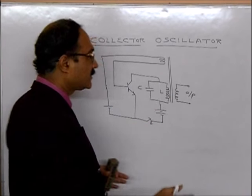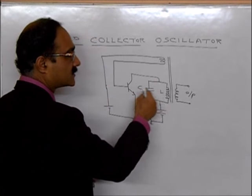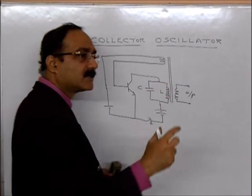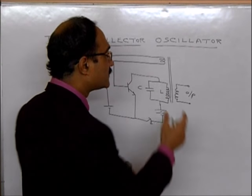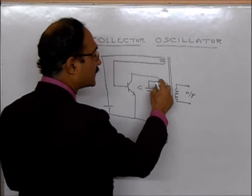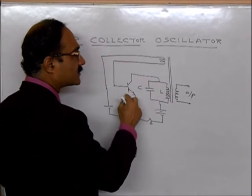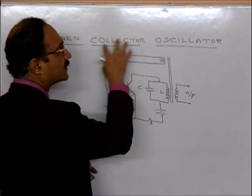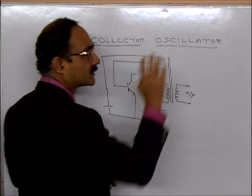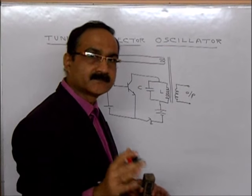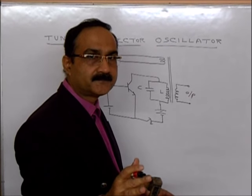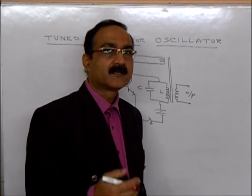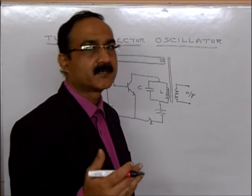This LC circuit is also called the tuned circuit. Since it is connected to the collector of the transistor, this is called the tuned collector oscillator.